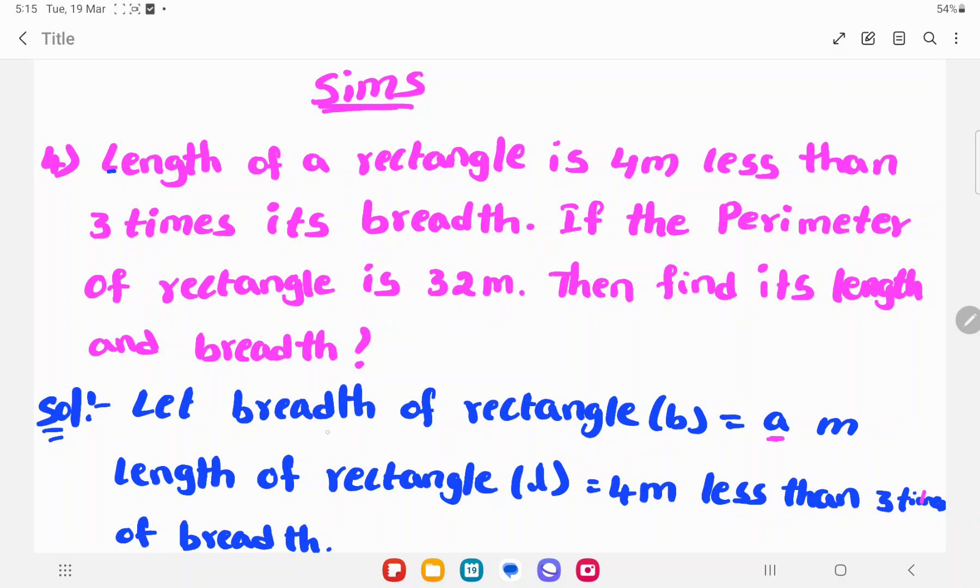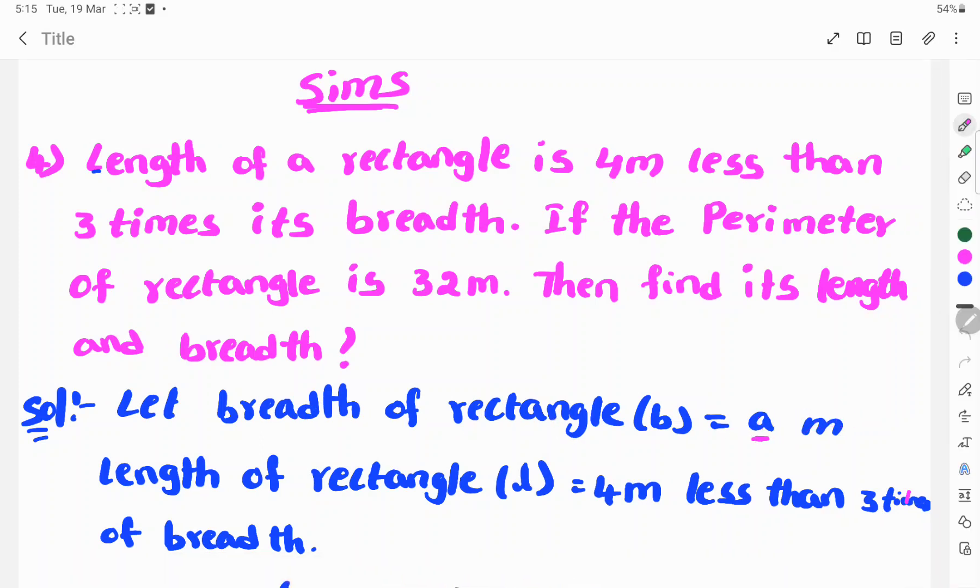Let's see the solution. Let the breadth of the rectangle be A. Length of the rectangle L equals 4 meters less than 3 times the breadth.